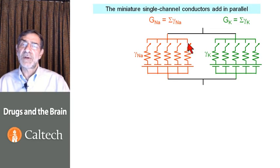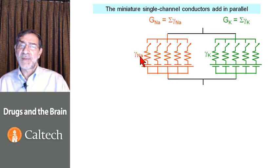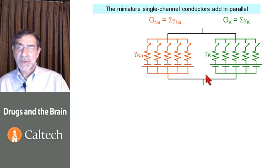Those little gammas all add in parallel. The gamma for sodium is not usually equal to the gamma for potassium. And the Nernst potential for sodium is around plus 60 millivolts as opposed to the Nernst potential for potassium, which is around minus 90 millivolts.